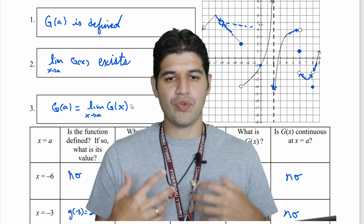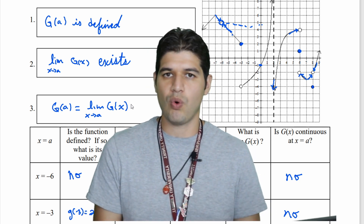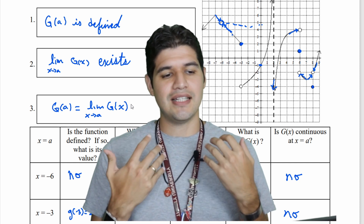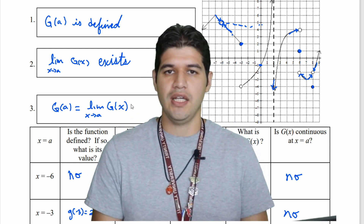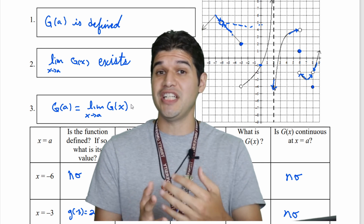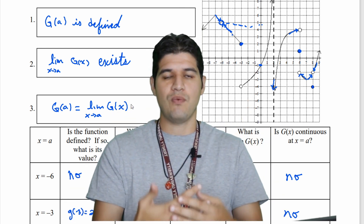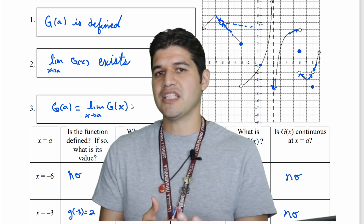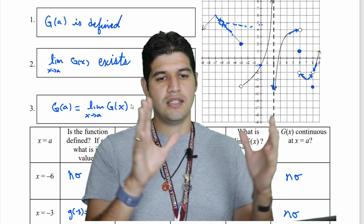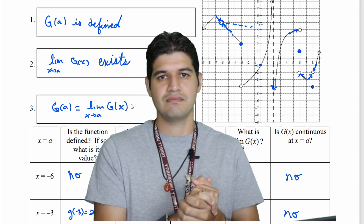That ends the notes section on the definition of continuity — this is the limit definition of continuity. You'll be able to show that a function is continuous without ever looking at the graph. Stay tuned for the next video as we're going to go over several examples applying our basic definition for continuity. See you then.